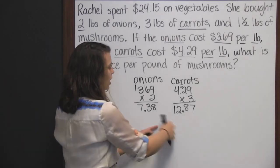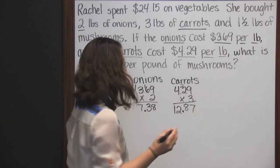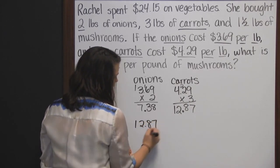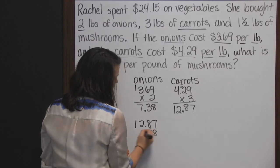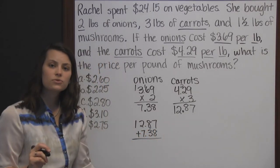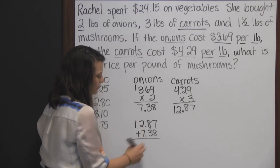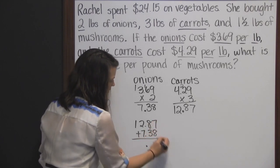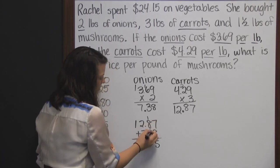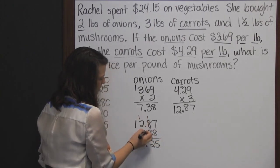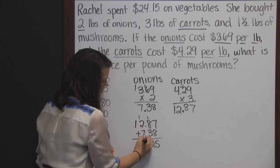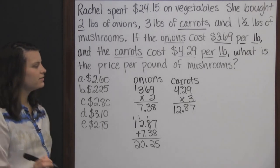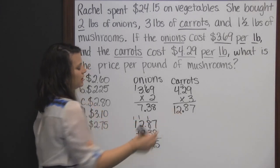Now I'm going to find the total spent on onions and carrots by adding these two values together: $12.87 plus $7.38. When you add or subtract decimals, make sure you line those decimals up. Seven plus eight is fifteen — write five, carry one. Eight plus three plus one is twelve — write two, carry one. One plus seven plus one is nine — plus two. So she spent twenty dollars and twenty-five cents on the onions and carrots.